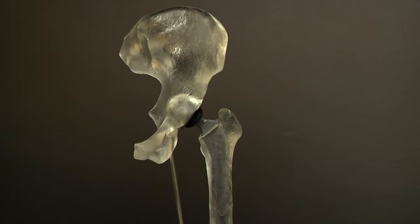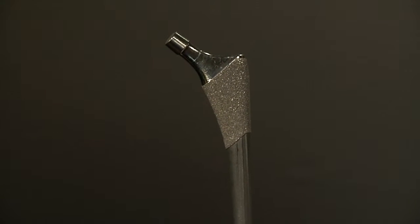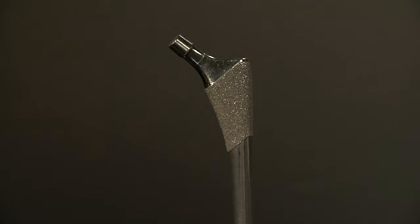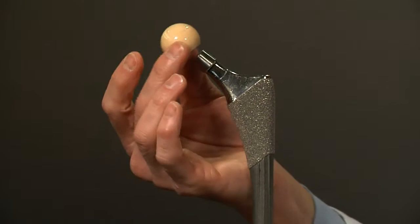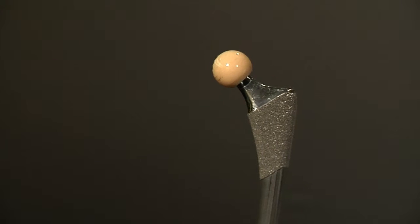This is an example of a hip replacement stem, or the portion of the joint replacement that goes in the thigh bone. On the top of the stem, a ball of various size and thickness is placed.